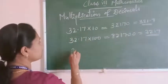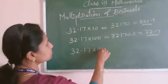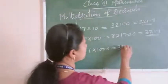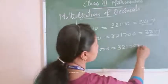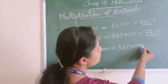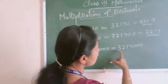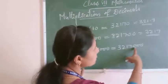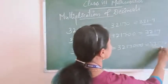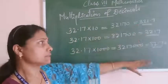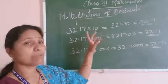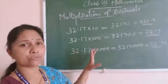Any one method which is easy for you — that method you can use for doing the multiplication of a decimal by 10, 100, 1000, etc. Now let us move to the next topic: how we can multiply a decimal number by a whole number. In question number 4, total 9 questions are given. I am showing only two questions here — question number 3 and question number 7.